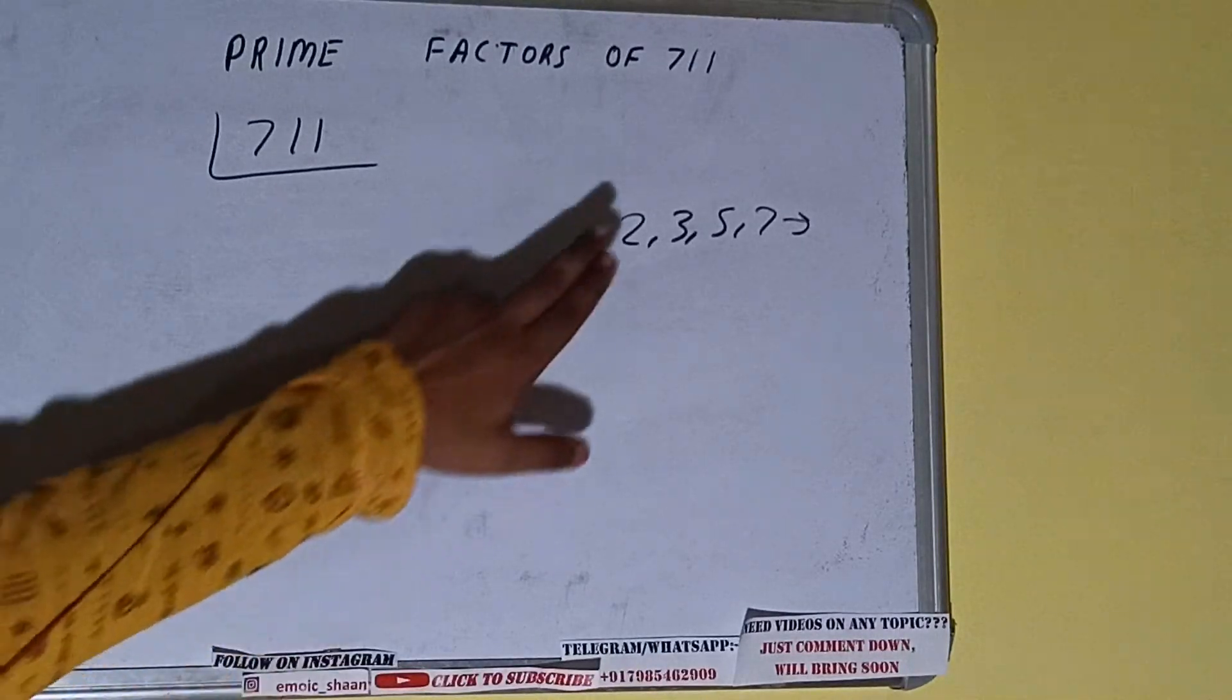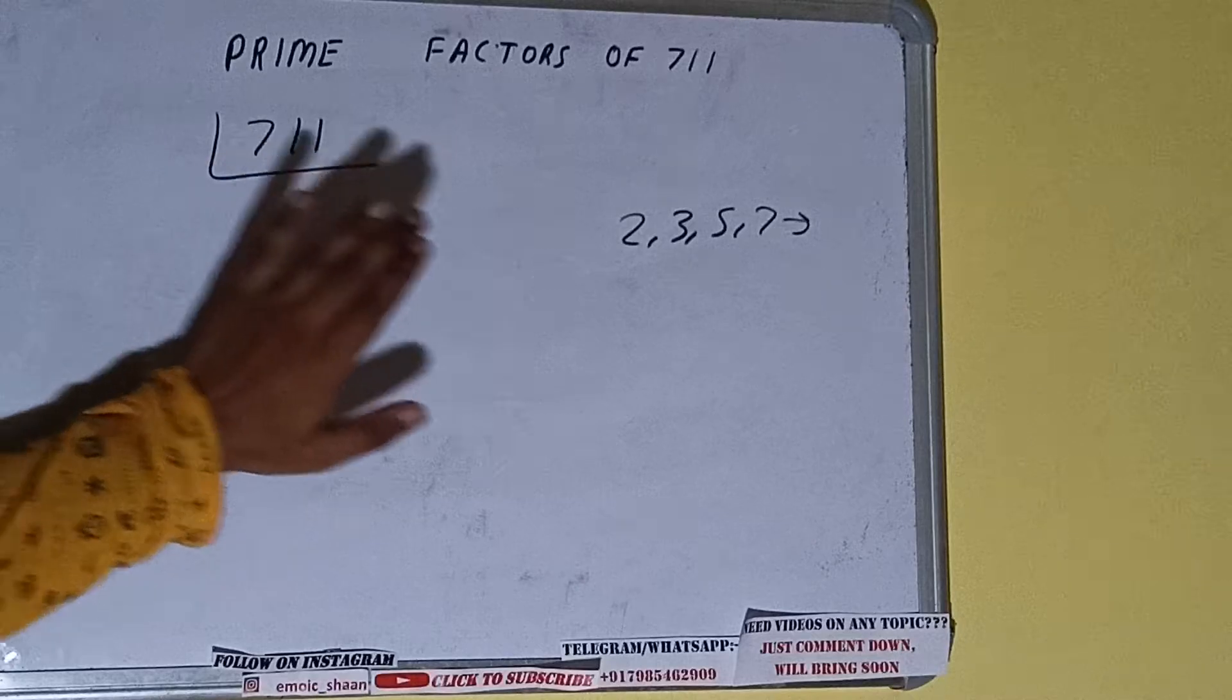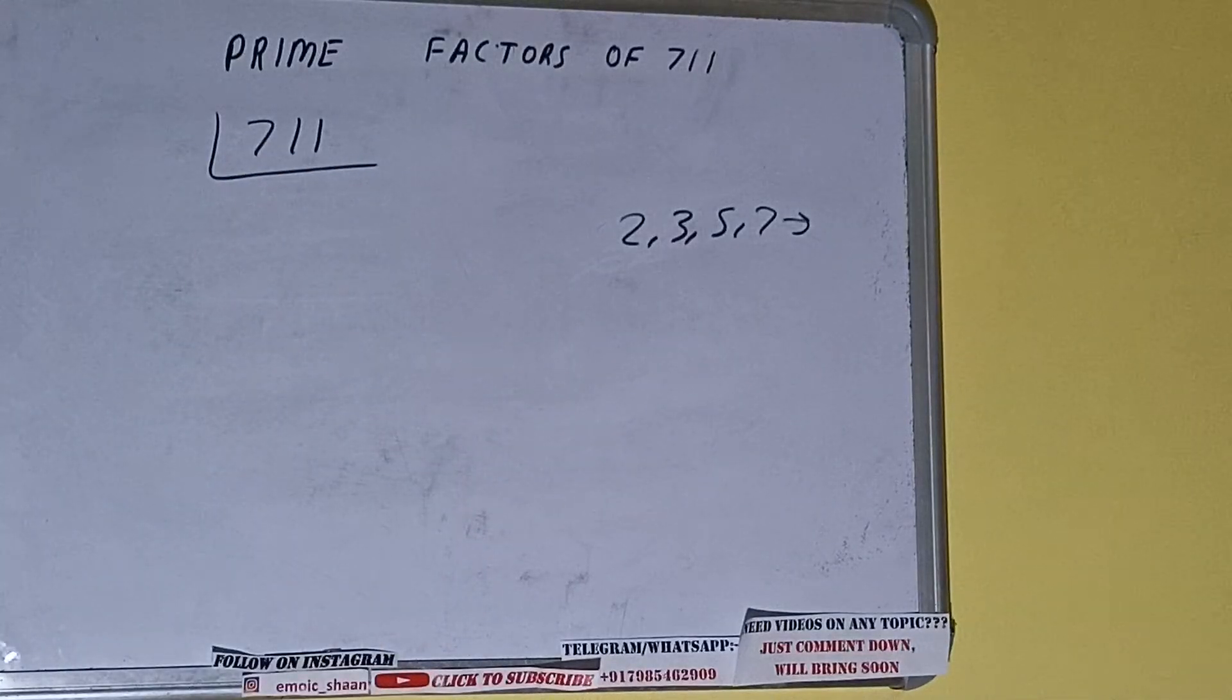Alright. So we'll check with the lowest prime number we have, that is 2. Is the number 711 divisible by 2? It is not, because the number is odd.